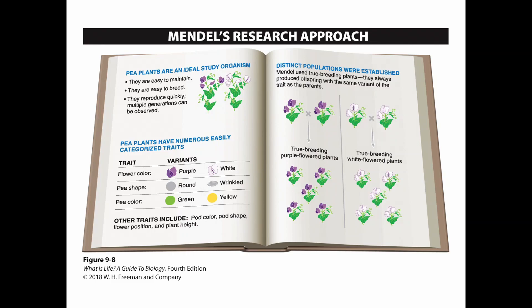He picked pea plants because they were very easy to maintain, easy to grow and breed, and they reproduced very quickly, so he could have multiple generations in his experiment in a very short period of time. They also had traits that were easily categorized — flower color would be purple or white, the pea's shape could be round or wrinkled, and the pea's color could be green or yellow. He also looked at pod color, pod shape, flower position, and plant height.